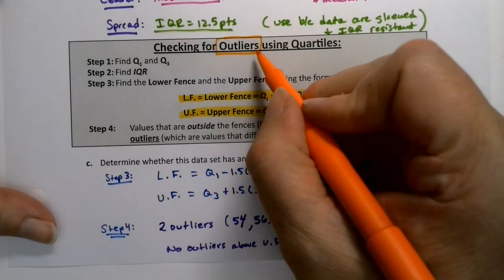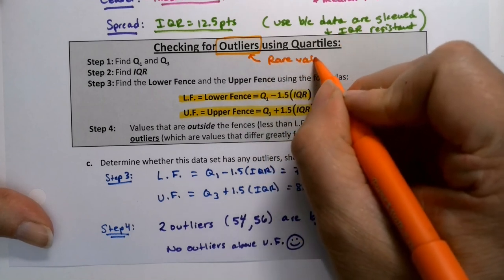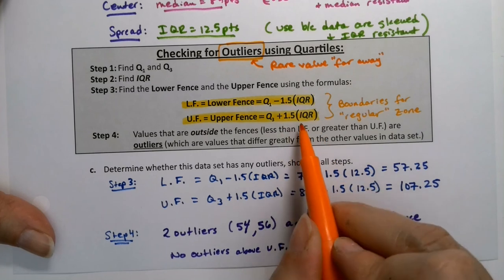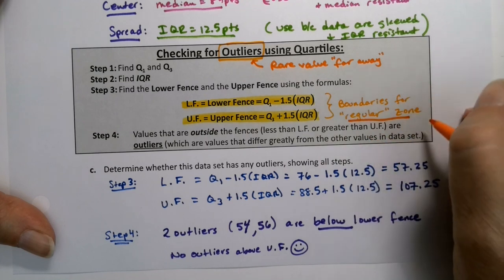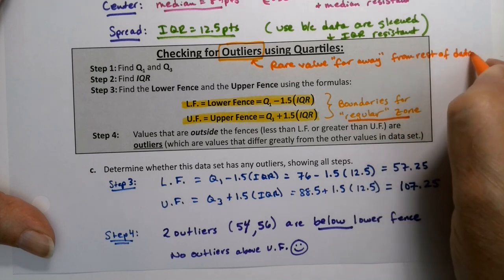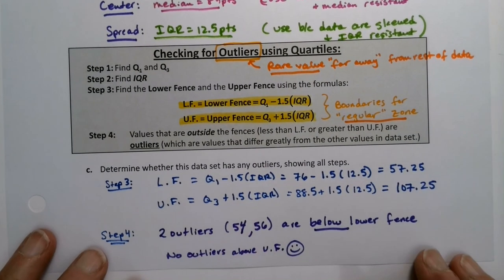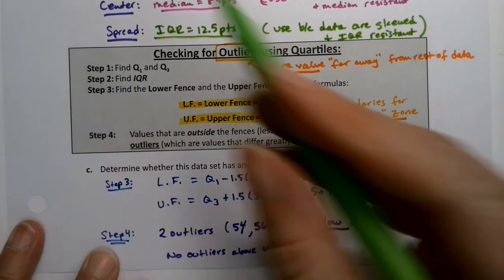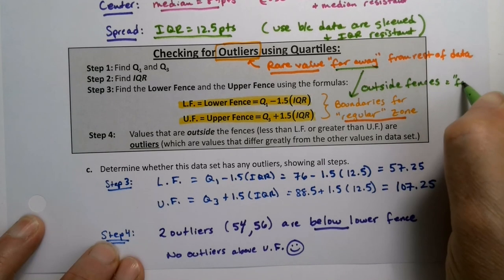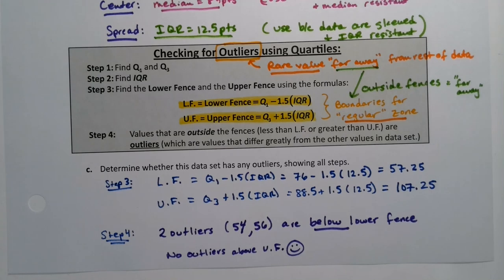So let me just make one more note. Outliers should be a rare value that's far away from the rest of the data. How do we determine far away? They're past the fences. So far away is outside these fences. You shouldn't have a ton of them in a data set. There should be a few, a couple, but it shouldn't be tons and tons. In a standard small data set, it shouldn't be lots. It should be maybe a couple, maybe three, something like that.